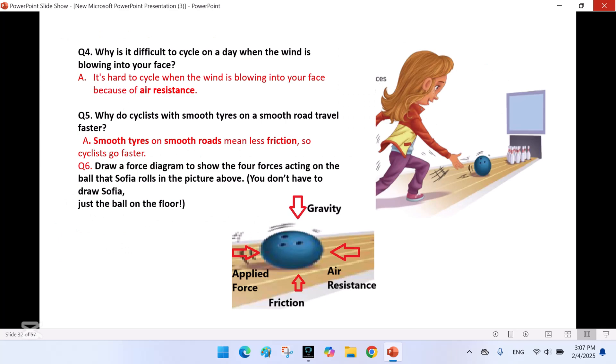Question number four. Why is it difficult to cycle on a day when the wind is blowing into your face? It's hard to cycle when the wind is blowing into your face because of air resistance. Why do cyclists with smooth tires on a smooth road travel faster? Smooth tires on smooth roads mean less friction so cyclists go faster. Draw a force diagram to show the four forces acting on the ball that Sophia rolls in the picture above. You don't have to draw Sophia just the ball on the floor. So here's the picture.